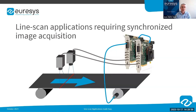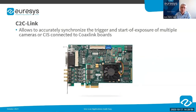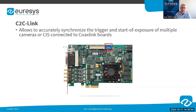When acquiring images of very large objects, several cameras are often required to cover the whole width of the area to be inspected, making it mandatory to synchronize acquisition across all cameras. Euresys frame grabbers support the C2C-Link feature, which very accurately synchronizes image acquisition between several cameras. A dedicated C2C-Link connector is available on the PCB of each frame grabber, managed through a master-slave architecture where the master frame grabber receives all trigger signals and propagates them to slaves, ensuring all cameras acquire each line at the exact same time.